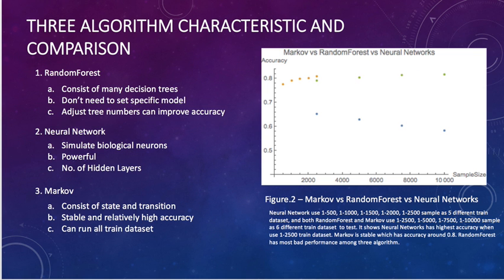Next, let's talk about the characteristics of three algorithms and their comparison. The first: random forest. Random forest consists of many decision trees, and they don't need to set a specific model. And we can improve accuracy by adjusting the tree numbers.